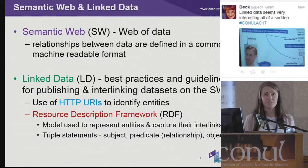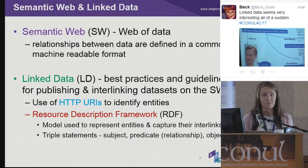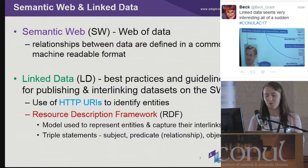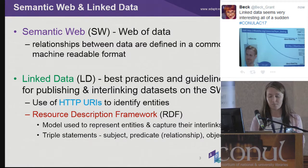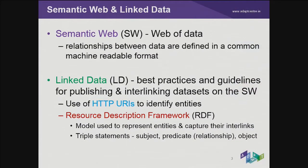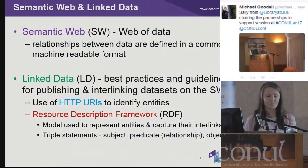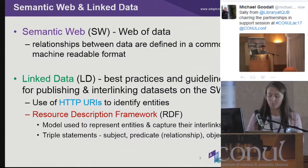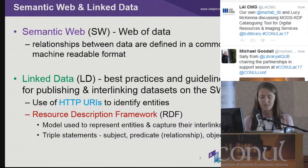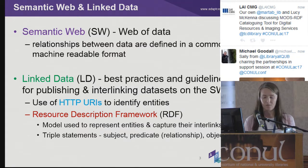The semantic web can be considered a web of data where the relationships between data are defined in a common machine-readable format. Linked data refers to a set of best practices and guidelines for publishing and interlinking datasets on the semantic web. That includes using URIs to identify and retrieve entities and using the Resource Description Framework to represent these entities and their interlinks.